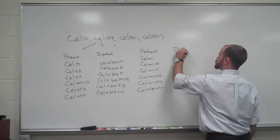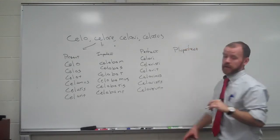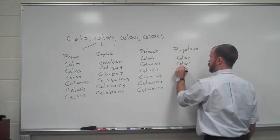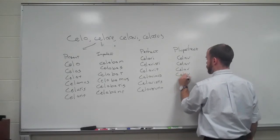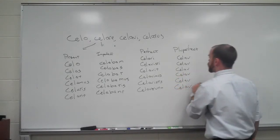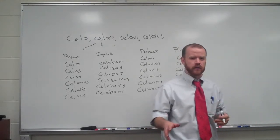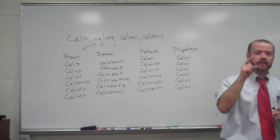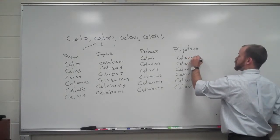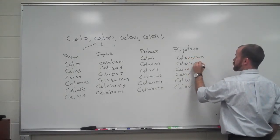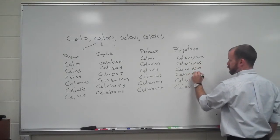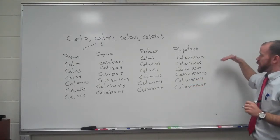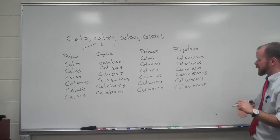Our pluperfect is going to use the same stem, but a different set of endings. They are: eram, eras, erat, eramus, eratis, erat. So all we have to do is add them on: Kelowueram, Kelowueras, Kelowuerat, Kelowueramus, Kelowueratis, Kelowuerat.